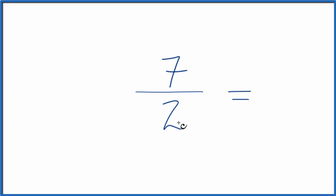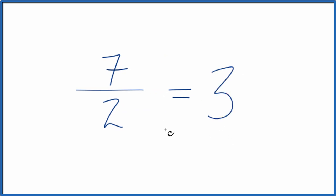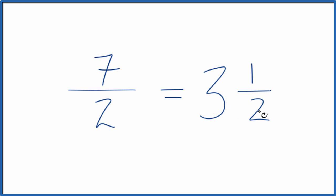So the way we do that is we divide 2 into 7. 2 goes into 7 three times with 1 left over. So we bring the 2 across, we end up with 3 and 1 half.